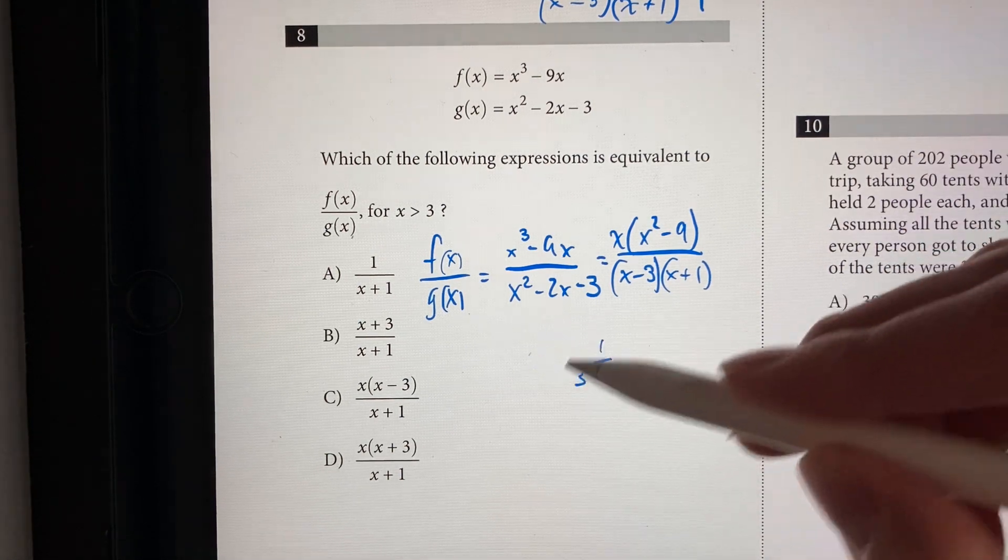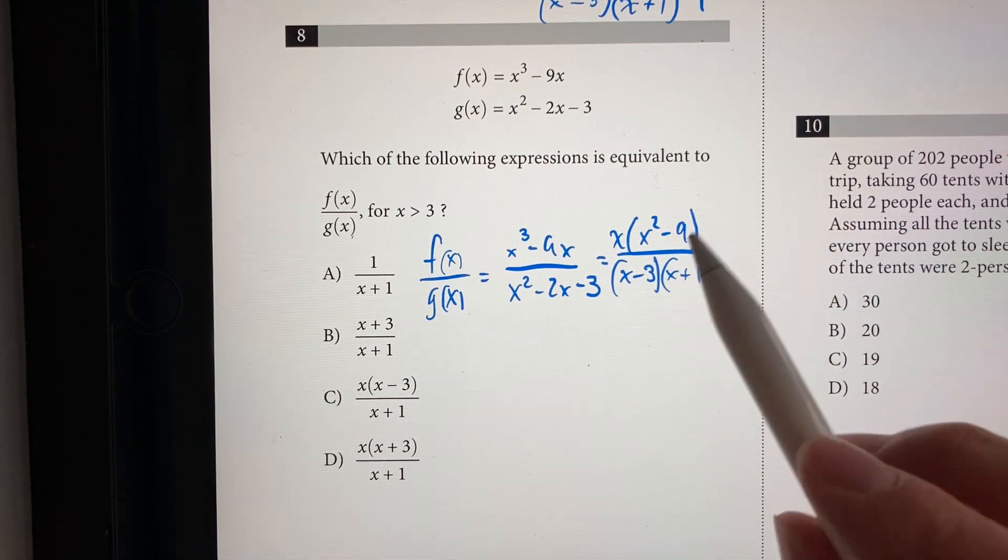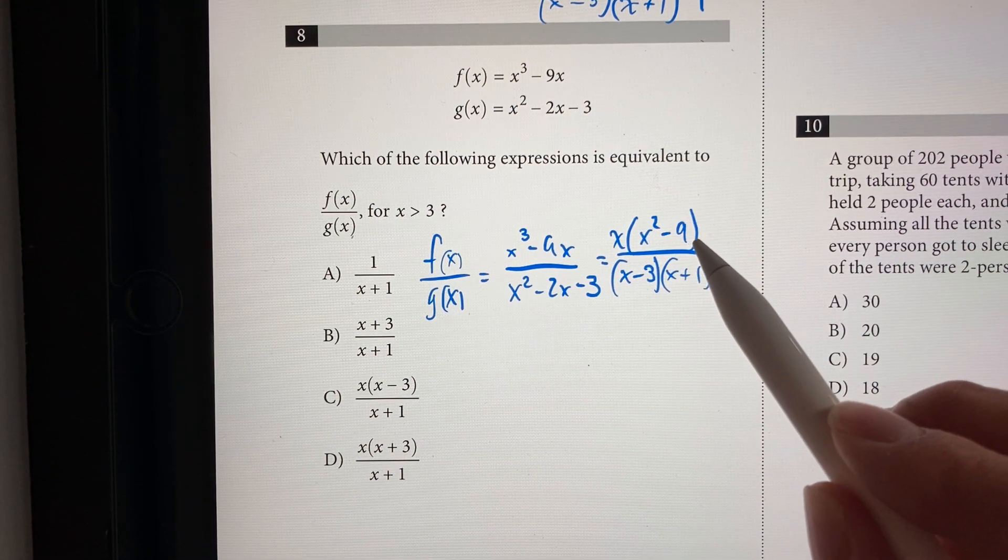Now that we did that, we can simplify this a little bit more. So x squared minus 9 can also be factored.